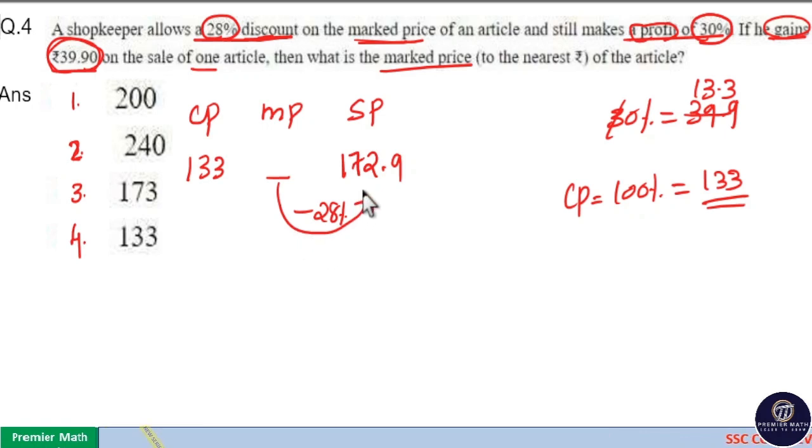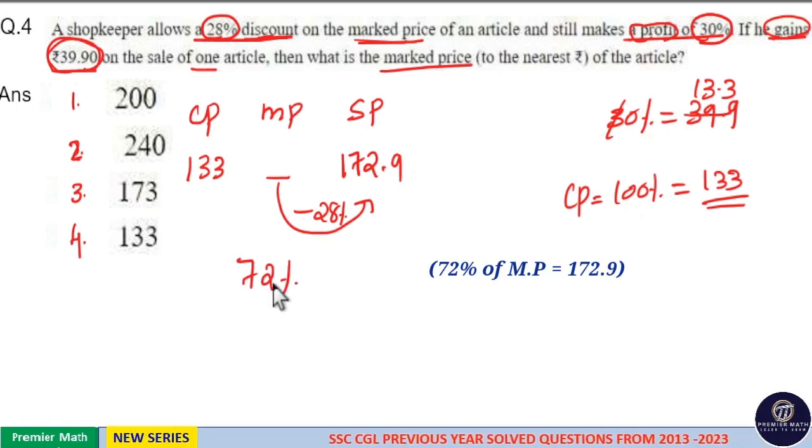This 28% discount leads to the selling price, which means if I consider 100% of marked price, then 100 minus 28 leads to the selling price, that is 72%. So this 72% leads to the selling price of ₹172.90.